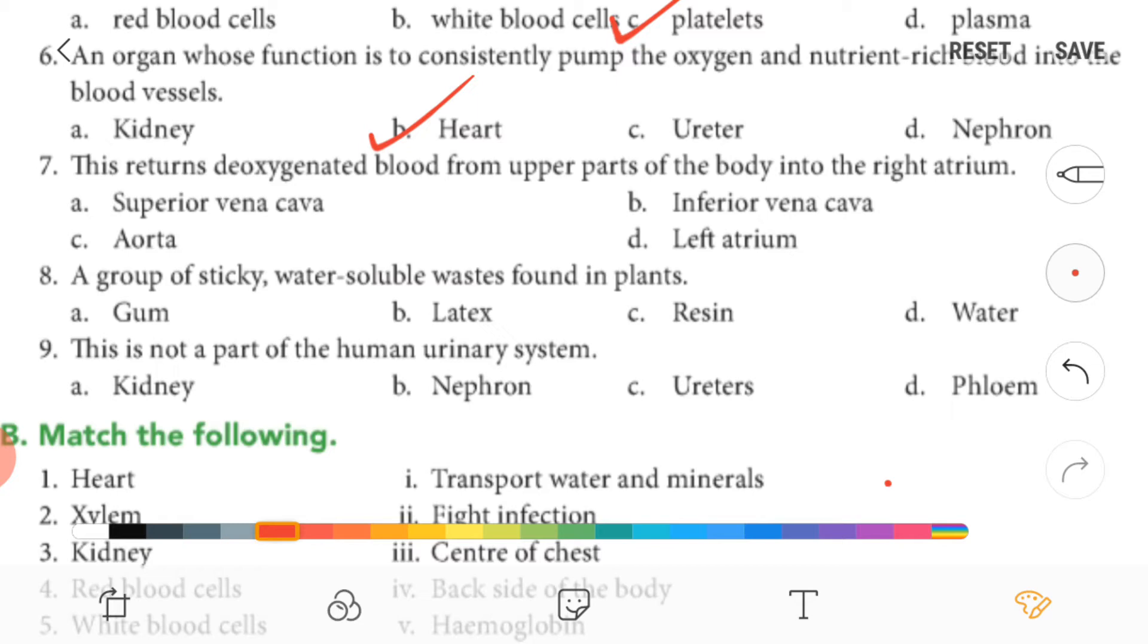Seven, this returns deoxygenated blood from upper parts of the body into the right atrium—it is superior vena cava.